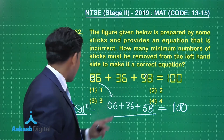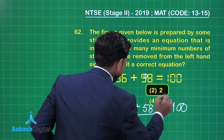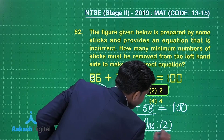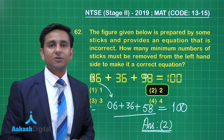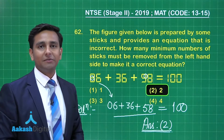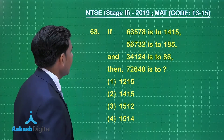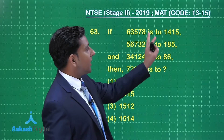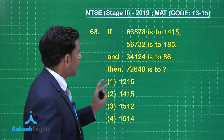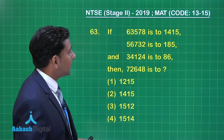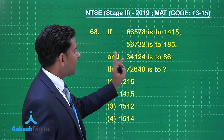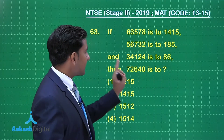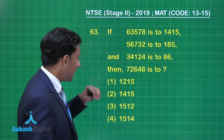Option number 2 is the correct answer for this question. I hope you understood this question. Now let's solve question number 63. If 63,578 is to 1450, 56,732 is to 185, and 34,124 is to 86, then 72,648 is to which of the given options?